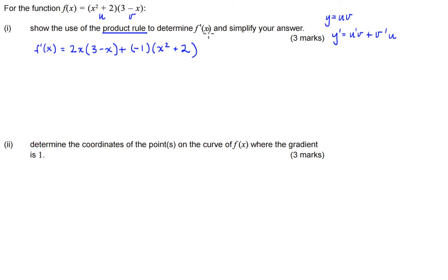It also asks us to simplify our answer. So we're going to multiply out all our brackets. I've got 2x times 3 is 6x, 2x times negative x is negative 2x squared, then I've got minus 1 times x squared is just minus x squared minus 2.